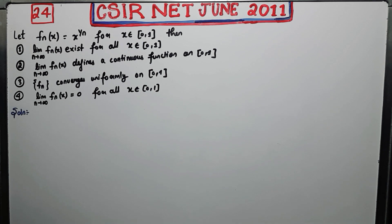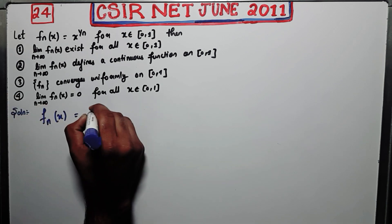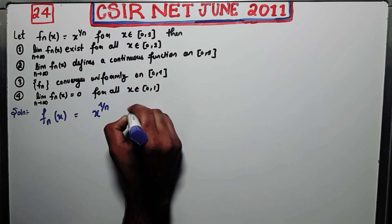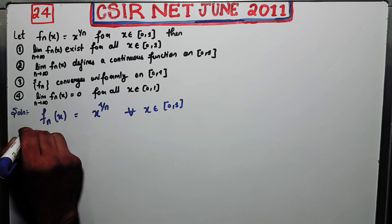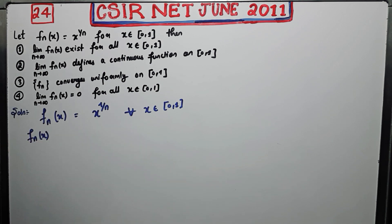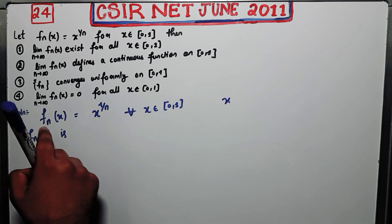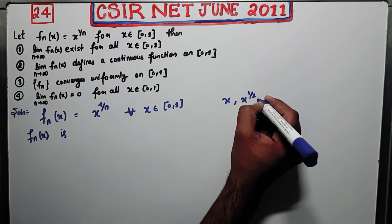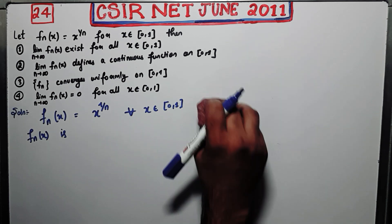First, I am going to calculate the pointwise limit for this given sequence of functions. You are given the sequence fn(x) = x to the power 1/n for all x in [0,1]. One important thing to notice first is that fn(x) is actually a sequence of continuous functions. When n=1 you get x, then root x, then cube root of x, and so on. Since you are on the positive domain [0,1], this sequence of functions is continuous.